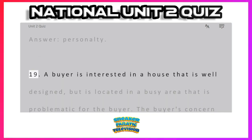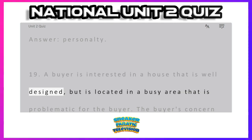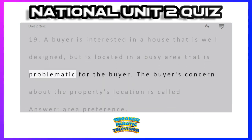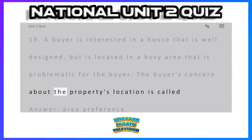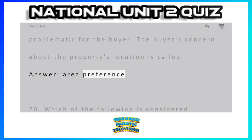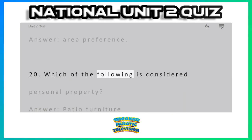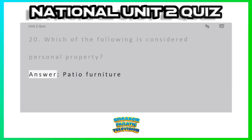Question 19: A buyer is interested in a house that is well-designed, but is located in a busy area that is problematic for the buyer. The buyer's concern about the property's location is called — Answer: area preference. Question 20: Which of the following is considered personal property? Answer: patio furniture.